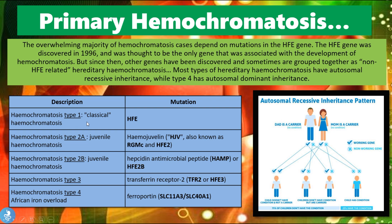Type 1 is the classical form, where the mutation occurs in the HFE gene. Type 2a, also called juvenile hemochromatosis, involves mutations in the HJV gene, also known as the HFE2 or RGMC gene. Type 2b is another form of juvenile hemochromatosis with mutations in the HAMP or HFE2 genes. Type 3 involves mutations in the TFR2 or HFE3 genes. Type 4 involves mutations in the SLC11A3 or SLC40A1 genes.